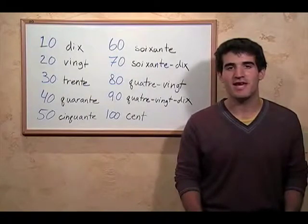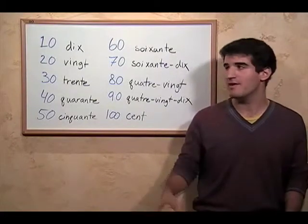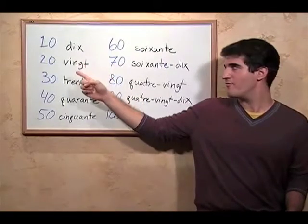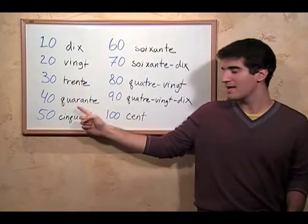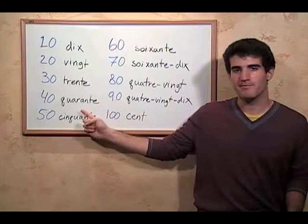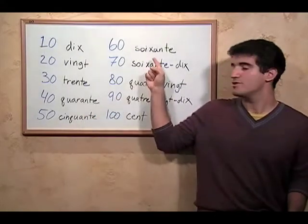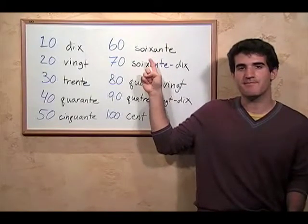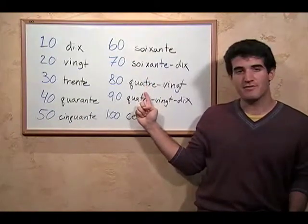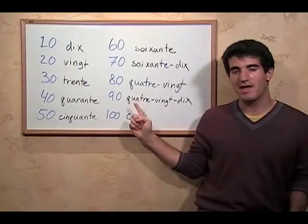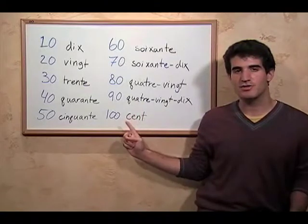Let's look at the numbers on the tens from ten to a hundred. For ten, we have dix. Vingt is twenty, trente is thirty, quarante is forty, cinquante is fifty, soixante is sixty, soixante-dix is seventy, quatre-vingt is eighty, quatre-vingt-dix is ninety, and cent is a hundred.